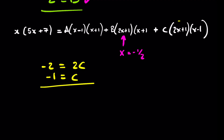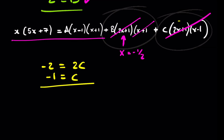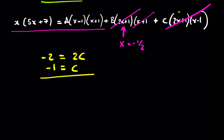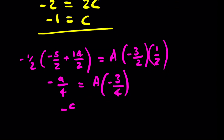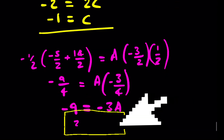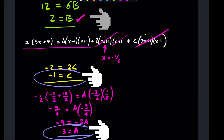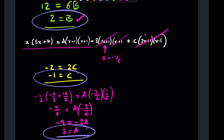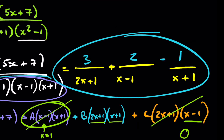Now pick x=−½, which makes the (2x+1) term zero, eliminating A's bracket. The B and C terms also vanish, leaving just those two evaluated terms. Dividing both sides by −3 gives A=3. We now have all three values — A=3, B=2, C=−1 — to substitute into the original expression, completing the second partial fraction decomposition.